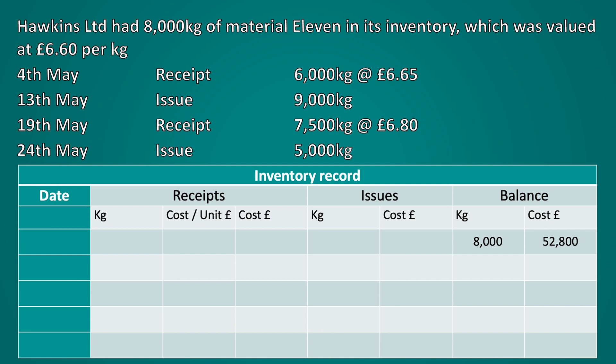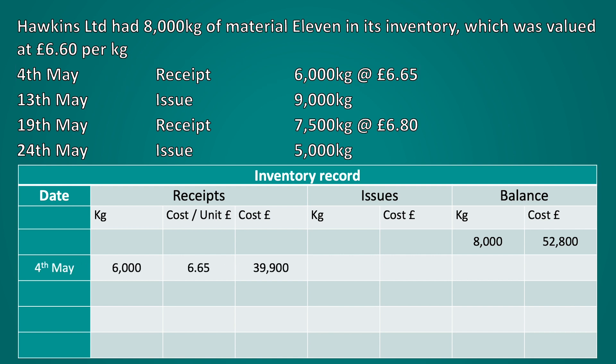Our next line would be the receipt of goods on the 4th of May — 6,000 kilograms at £6.65 per kilogram. We then add the kilograms and the cost to the existing balance at the start of the month to give us our updated balance following the receipt of inventory.